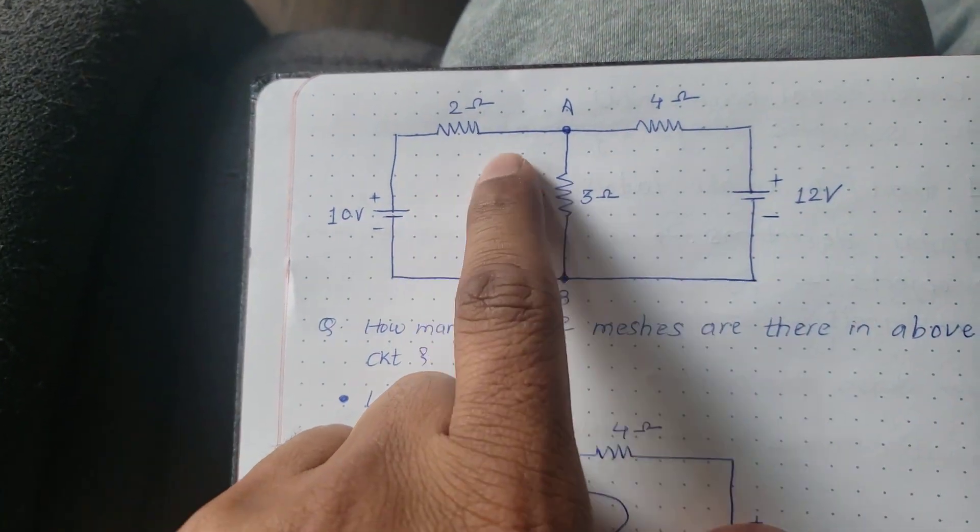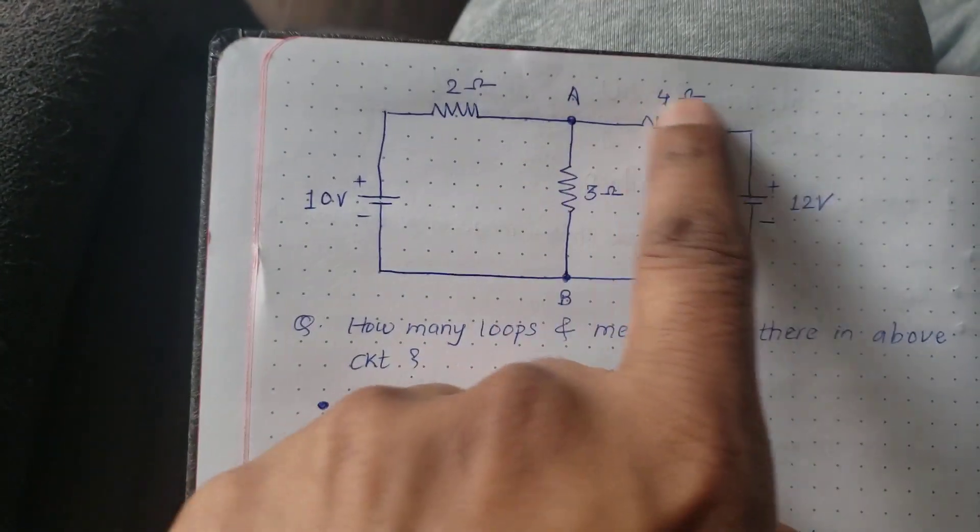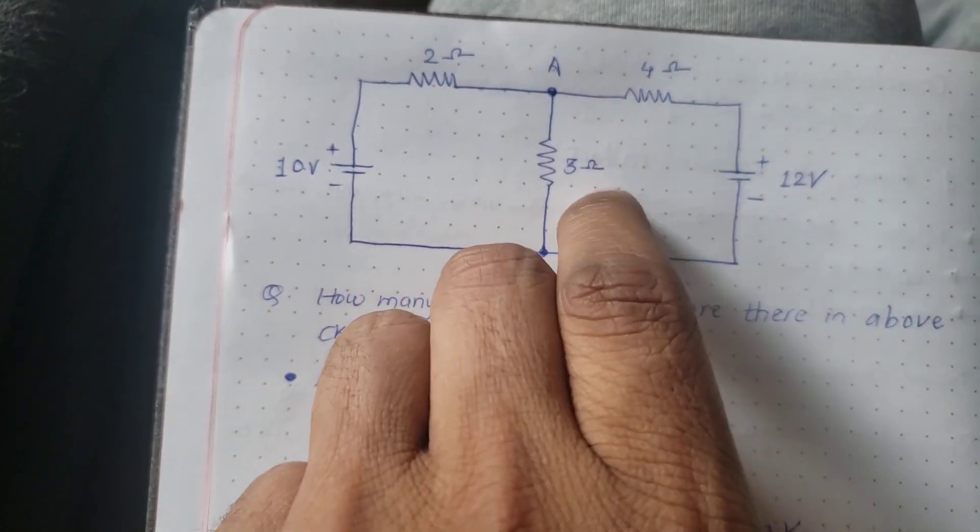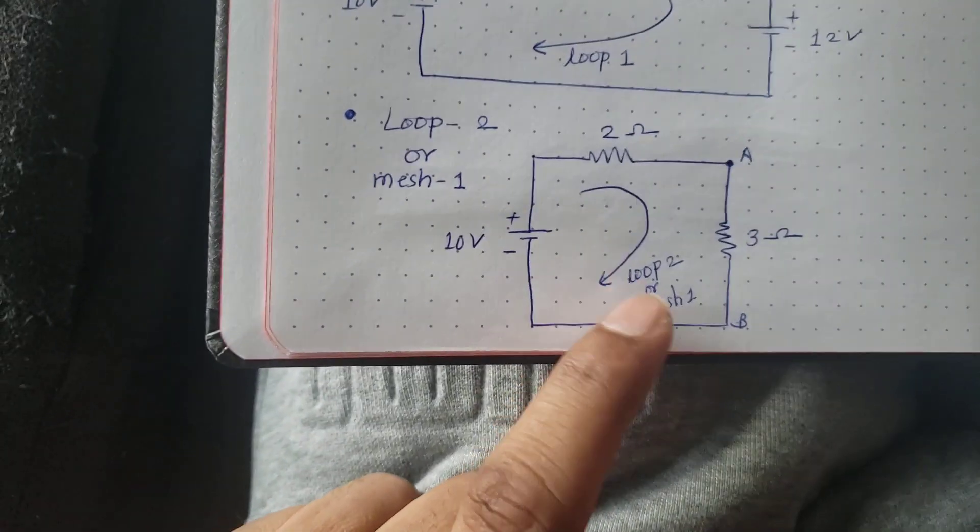Why mesh? Because there is nothing inside it. I am considering only the left hand side. There is no other circuit inside it like these ones. For this loop there were these two meshes or two loops inside it.